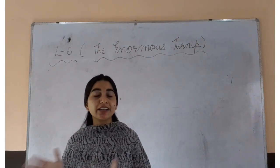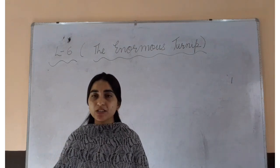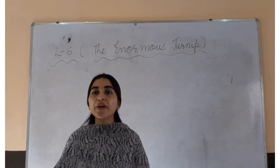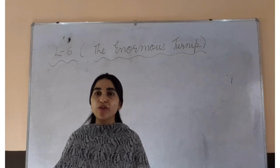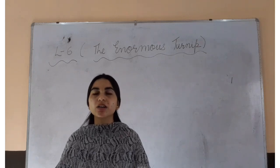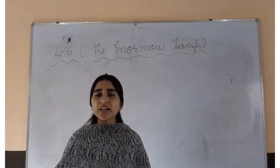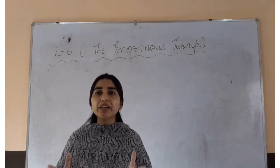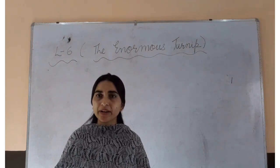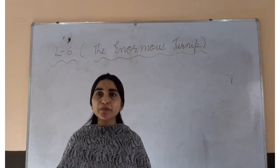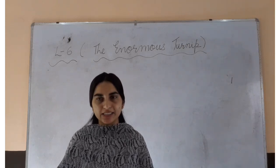At last, the enormous turnip was out. This was about the poem, The Enormous Turnip. One farmer was there. He grew a turnip seed and later on he found that the turnip is growing bigger and bigger. Later on, an old woman, a boy and a girl helped him to pull out the enormous turnip, and they ate it.